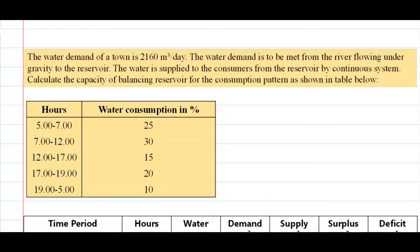Hello everyone, welcome to Engineered. In today's video we'll be solving a numerical related to the capacity of a balancing reservoir. This particular numerical is from water supply engineering. The question is: the water demand for a town is 2160 meter cube per day.